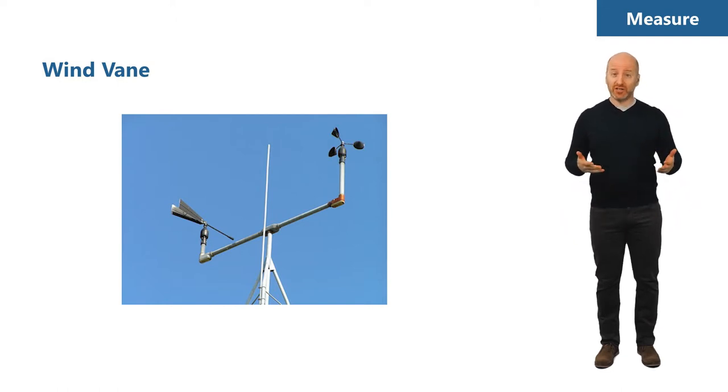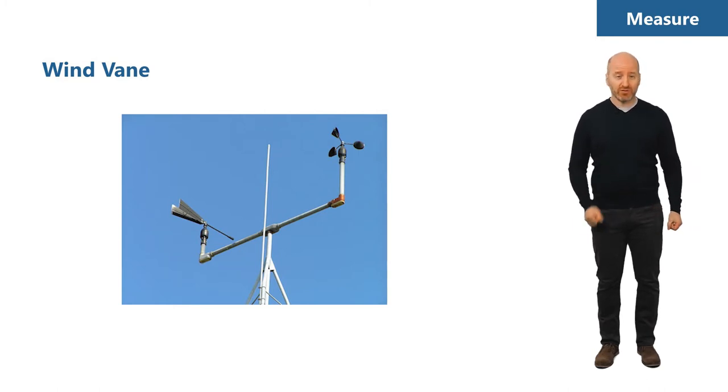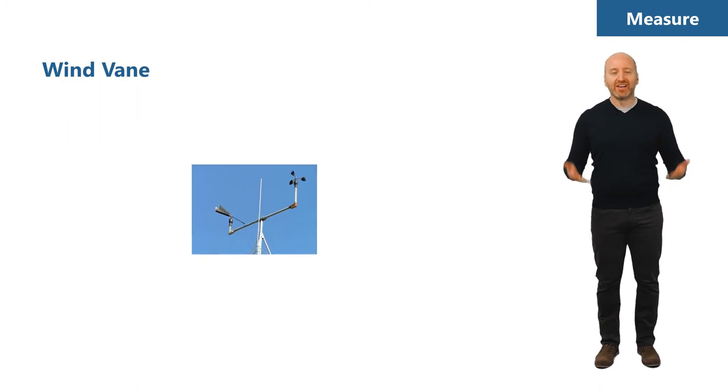Temperature, pressure, and humidity data is necessary to calculate the density of the air, which is important because denser air carries more power. This means that a wind turbine installed high in the Rocky Mountains would generate significantly less energy than a turbine installed in the lowlands of Holland, even if the wind speed and temperature are identical on both sites, because air is less dense at high altitudes.